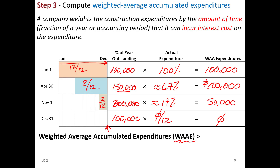When we sum up all these weighted payments, our total weighted average accumulated expenditures — our YE — is $250,000. The full $650,000 was paid sporadically, but the weighted average tells us how long those expenditures had been outstanding during the period.